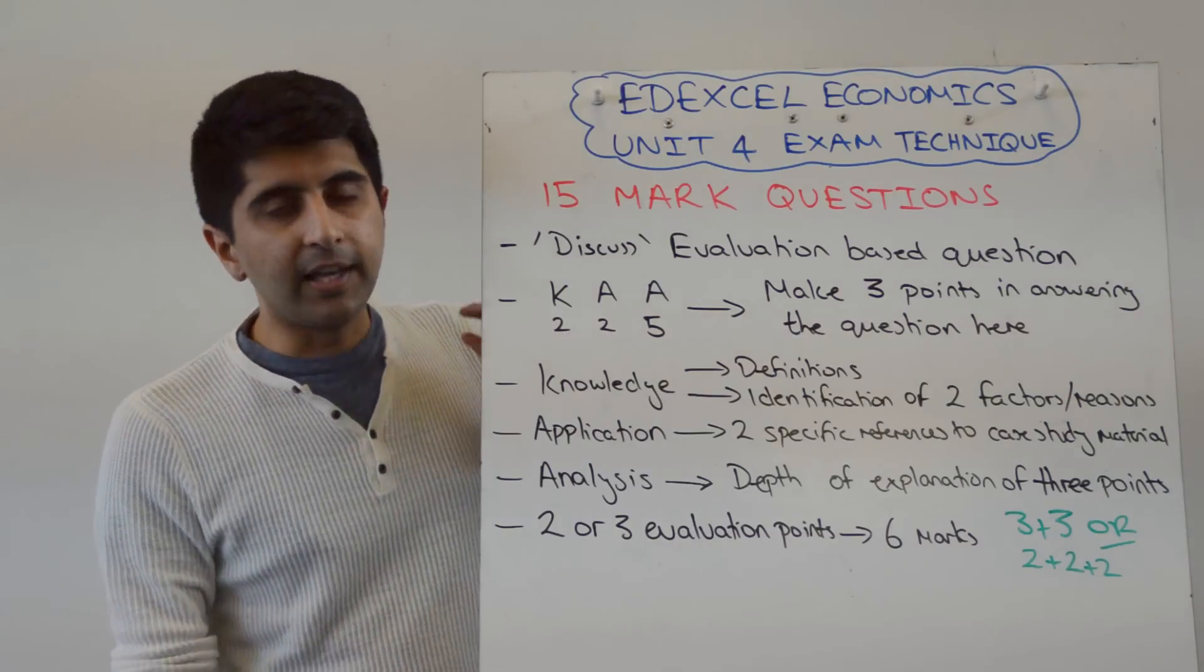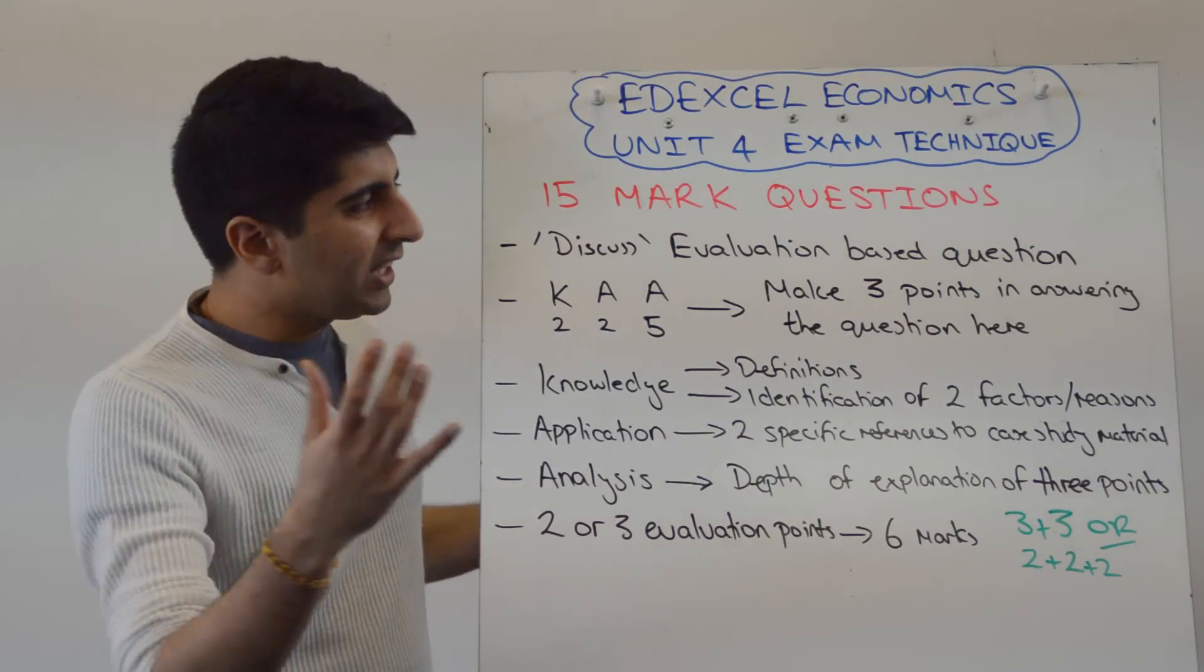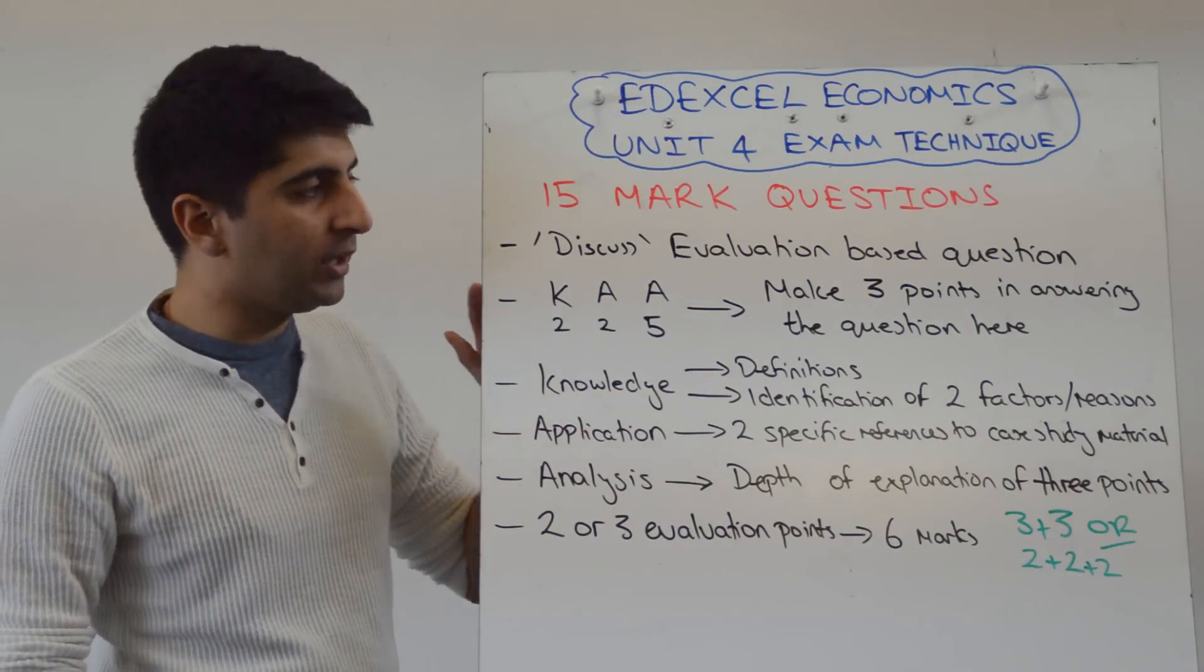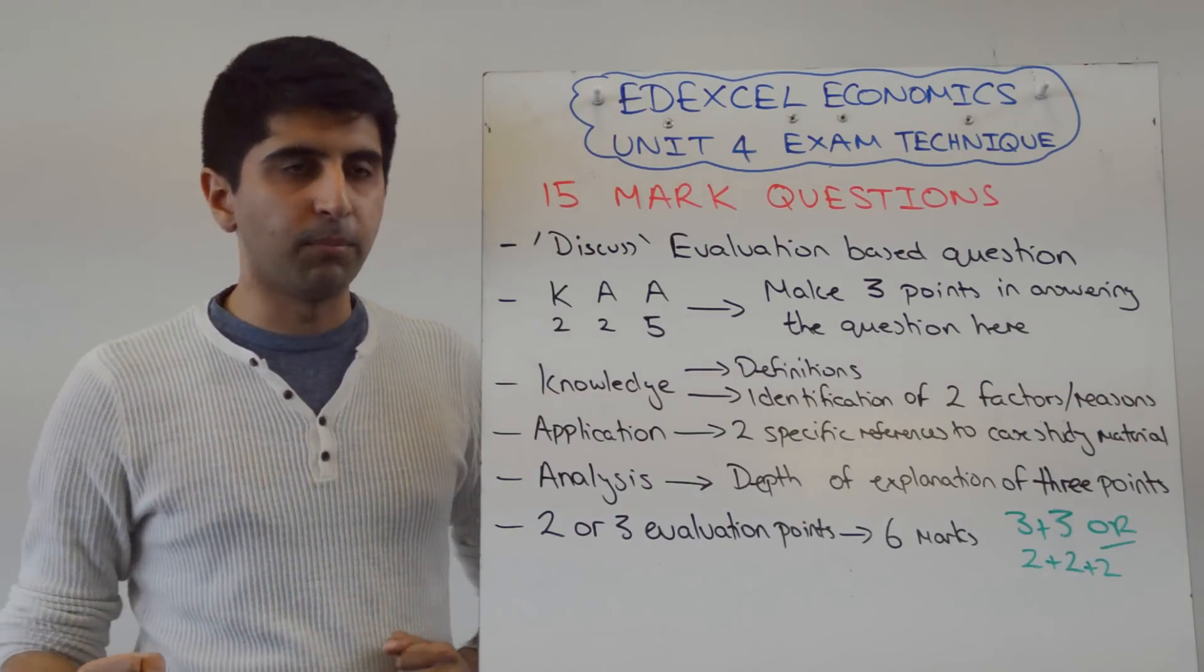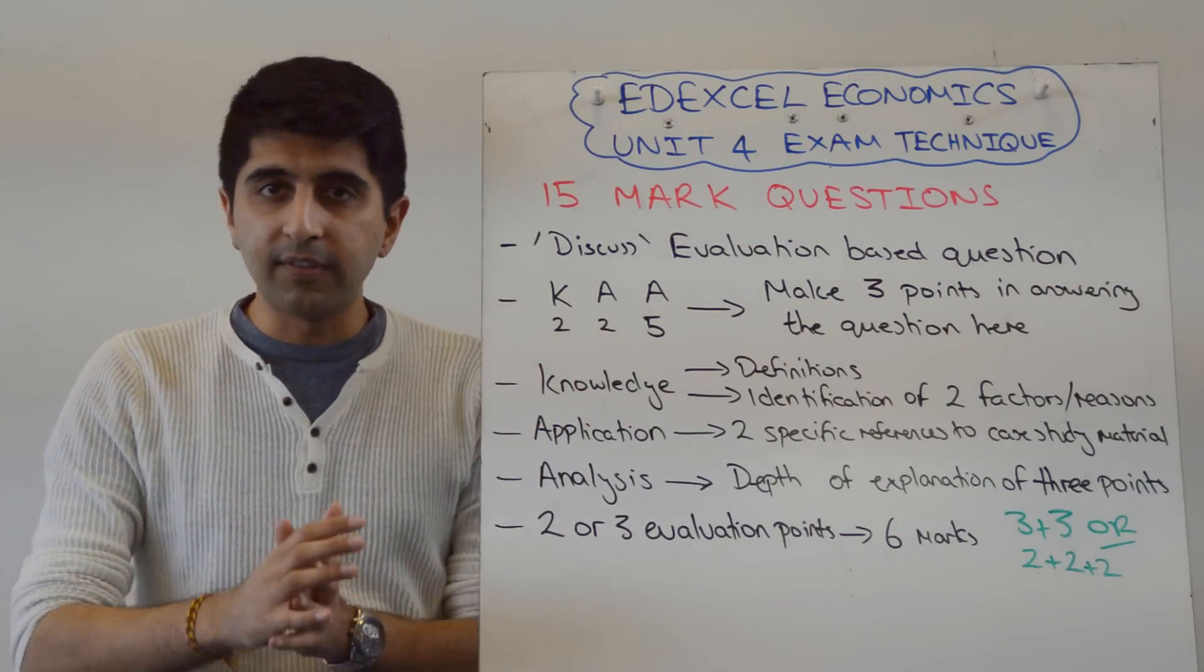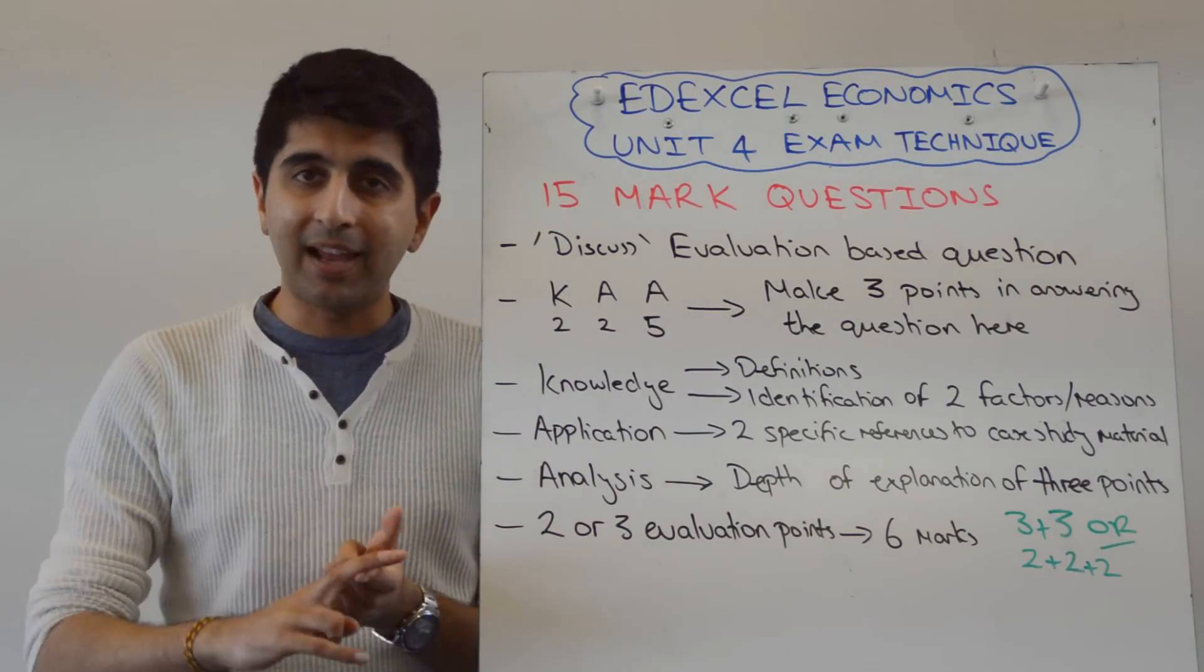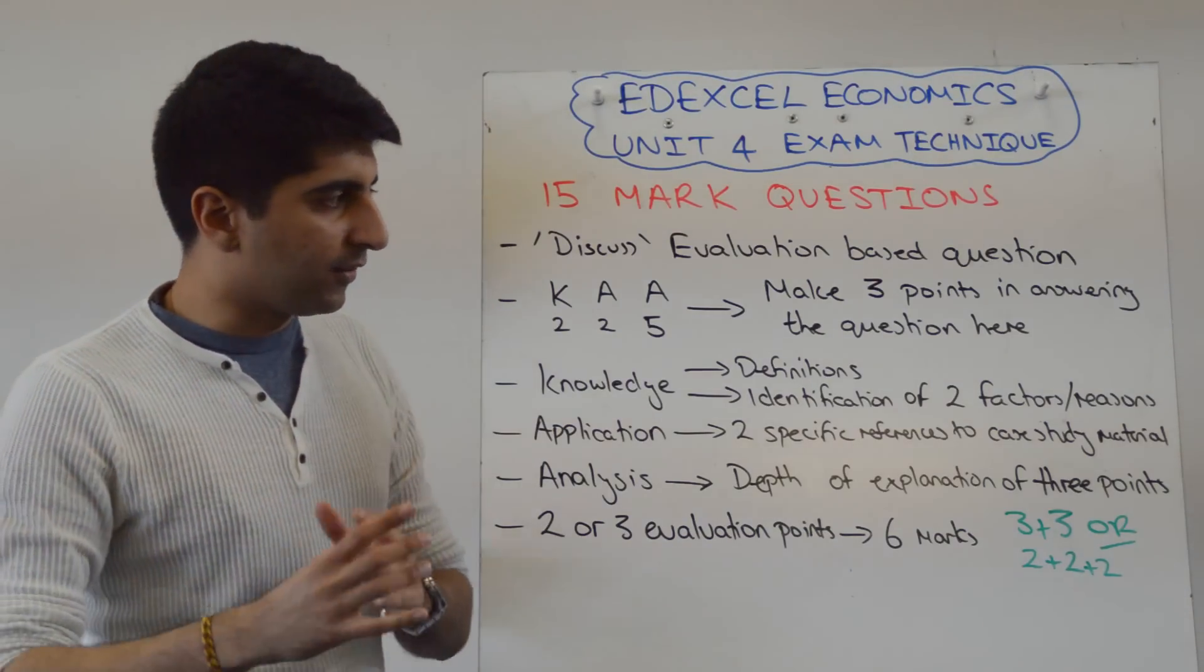We can be more definite. It's going to be a discuss, evaluation-based question. The key thing is not the word discuss, it's that it's an evaluation-based question. So that means you need to make some KAA points and some evaluation points. I recommend making 3 KAA points. This is a difference from the other two questions, the 10 and the 12 that have gone before it. Here, I recommend making 3 instead of the 2 I said before.